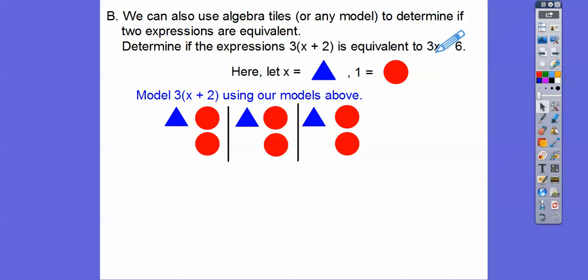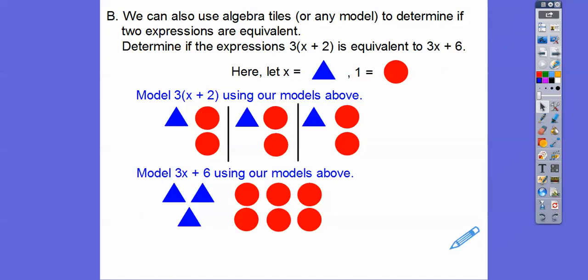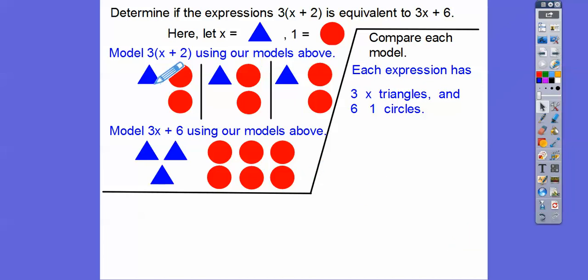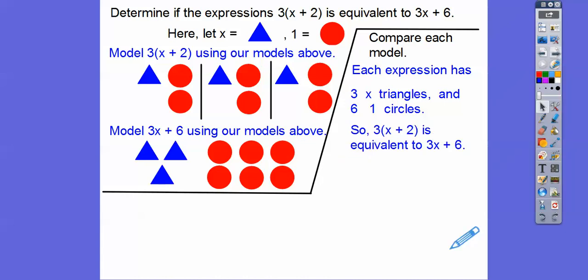Now for 3x plus 6, we're going to do three of the x triangles plus six circles. Let's compare: each expression has three x-triangles — this one has 1, 2, 3 x-triangles, and this one also has three x-triangles — and both have six red circles. So that means they are equivalent to each other.